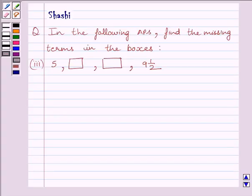Hi and welcome to the session. I am Shashi and I am going to help you solve the following question. The question is: in the following APs, find the missing terms in the boxes. Part three is 5, blank box, blank box, 9½.